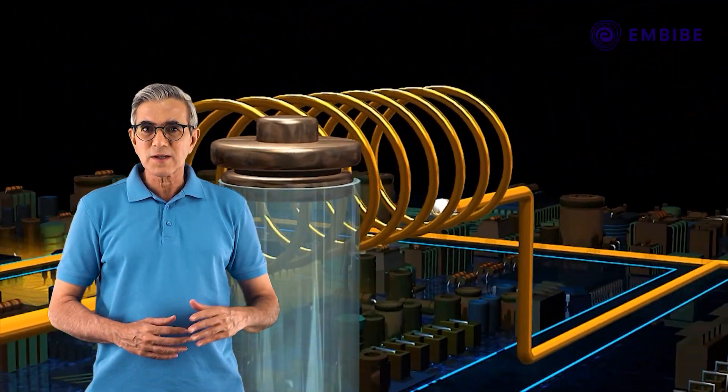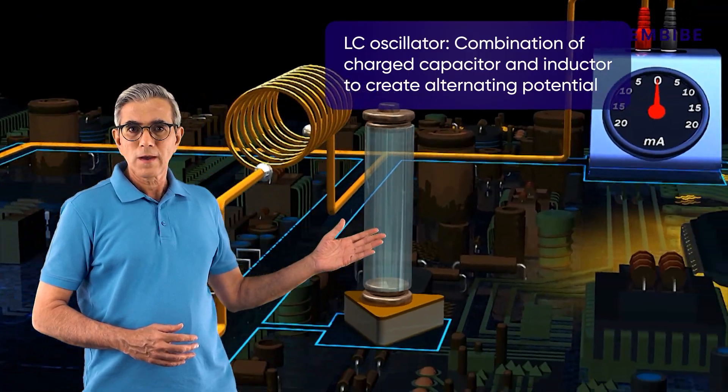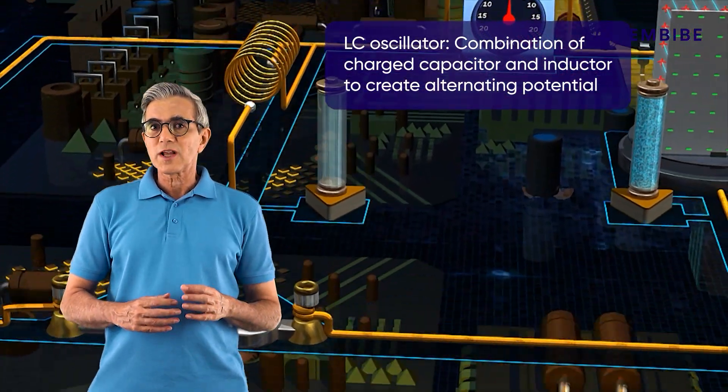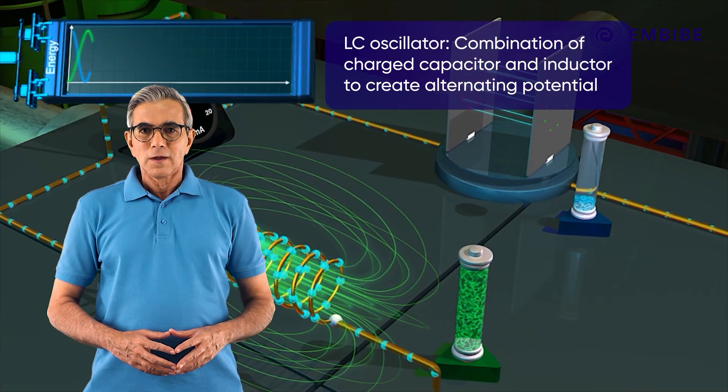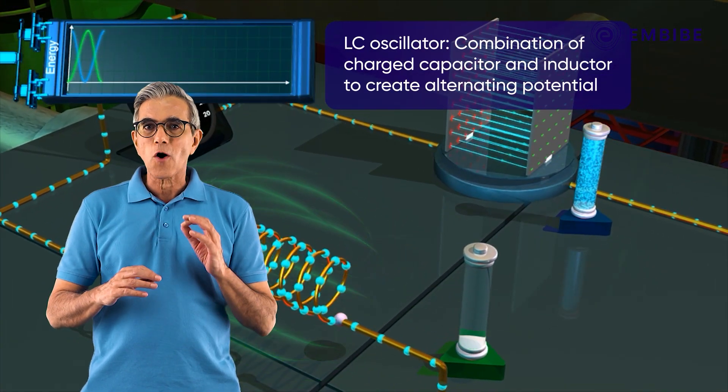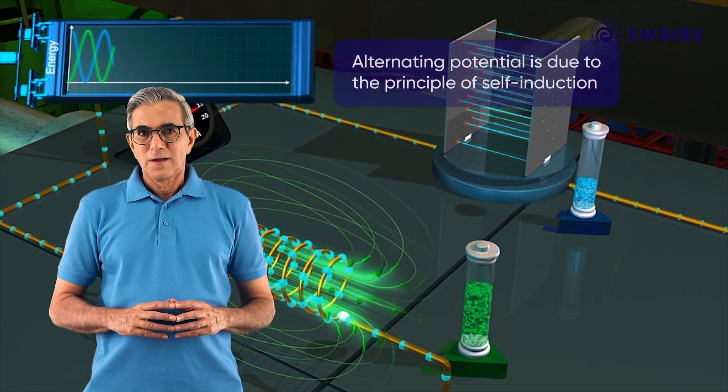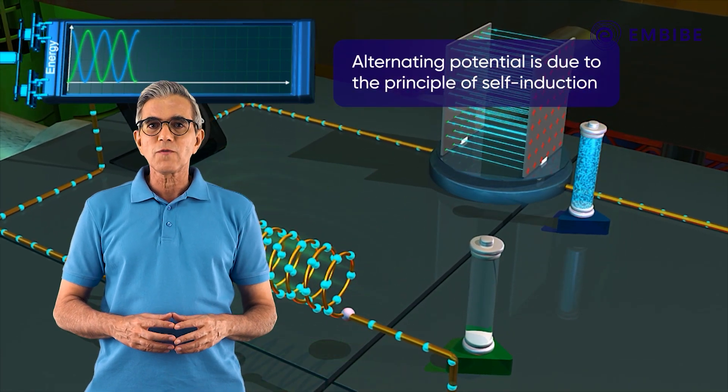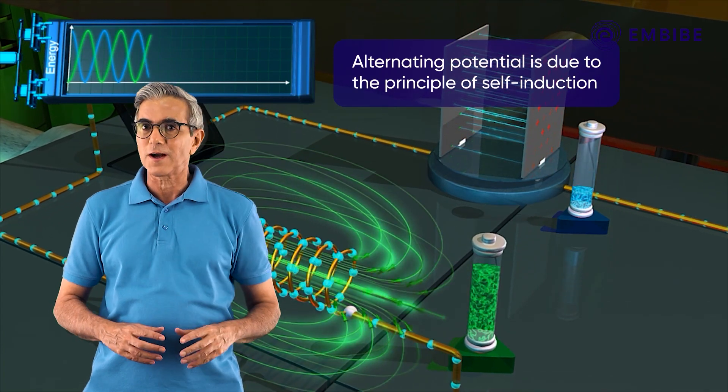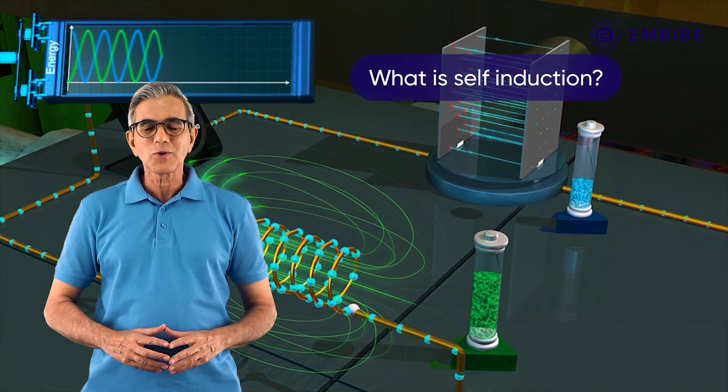When a charged capacitor is connected across a coil, an alternating potential difference is observed across the coil. This combination is called an oscillator. The alternating potential is observed due to the principle of electromagnetic self-induction. Let's learn about this in detail.